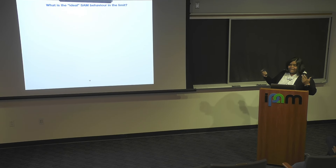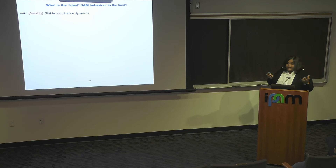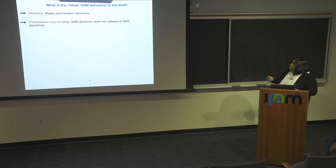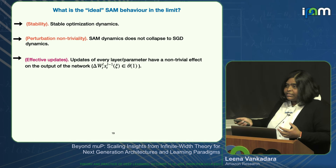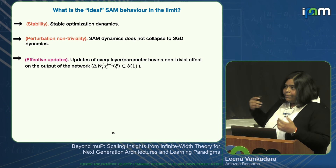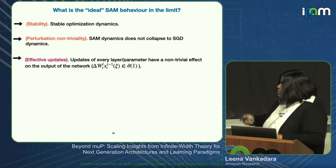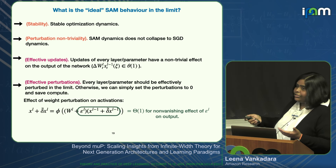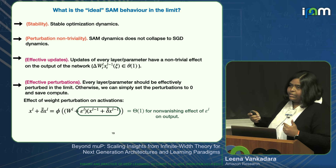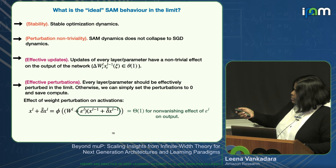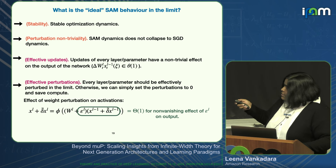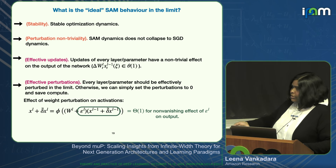What is the ideal SAM behavior? We want four properties: stability (optimization dynamics stable with width), perturbation non-triviality (SAM dynamics shouldn't trivially collapse to SGD), effective updates (every layer's update has non-trivial effect on activations or function output, as in MuP), and effective perturbations (the weight perturbation in every layer has order-one effect on activation perturbations or function output). Without effective perturbations, you could just set perturbations to zero and save compute. We postulate that both effective updates and effective perturbations are needed for hyperparameter transfer from small to large scale models.